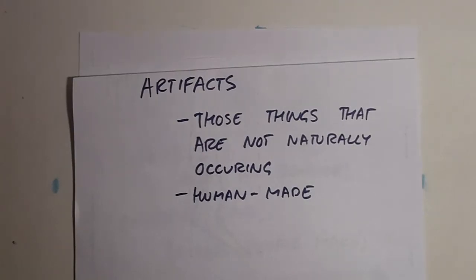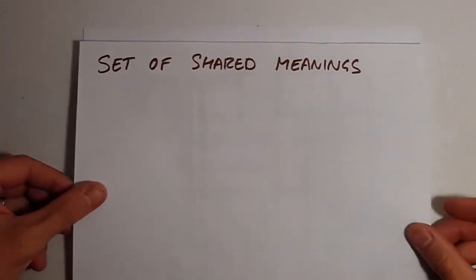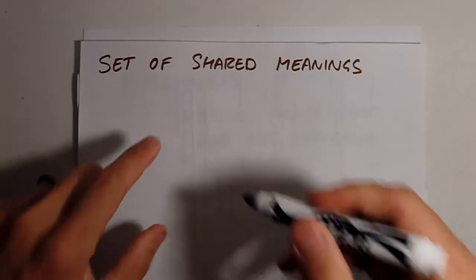Now, there's another explanation for culture, which is related to this one, and also useful in sociology. Culture can be described as a set of shared meanings. They're meanings shared by those people that share a culture. Now, I'll use a quick example to illustrate this.